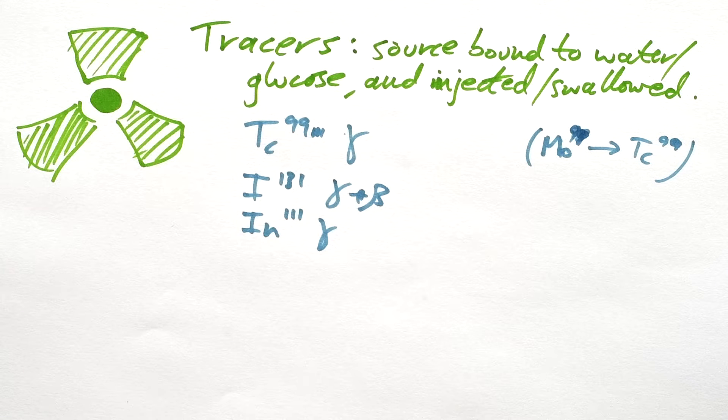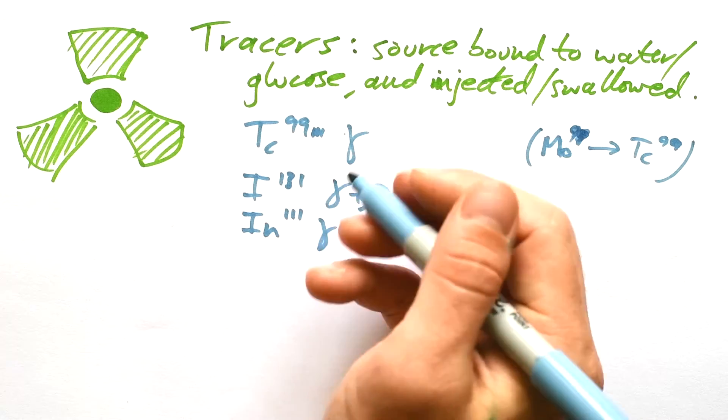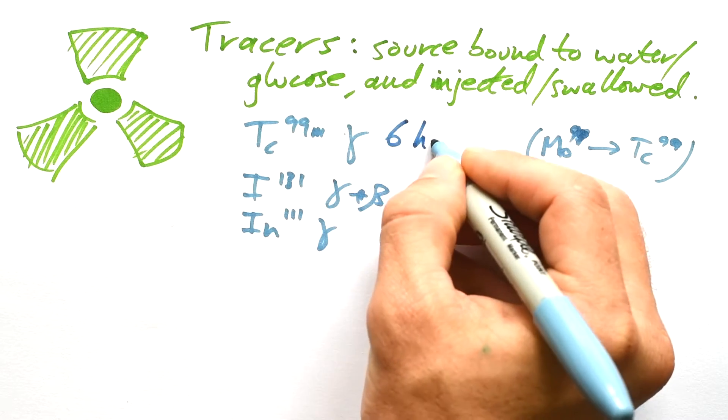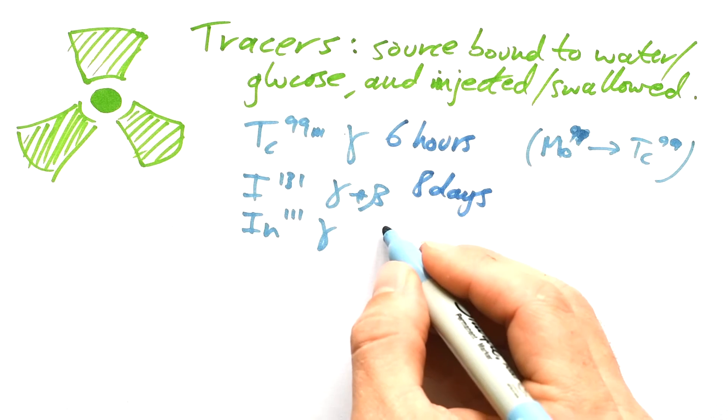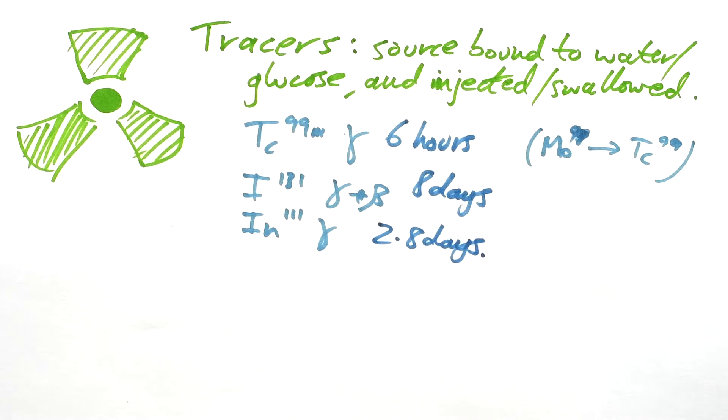Now what are the half-lives of these sources? We don't want them to be too short because otherwise you won't be able to do a scan. We also don't want them to be too long because otherwise they're going to stay in someone's body for a long time, and that's no good. Technetium has a half-life of about 6 hours, Iodine-131 8 days, and Indium nearly 3 days. Now we call these the physical half-lives. That's the normal half-life, what we're used to. Technetium is sort of like a good all-rounder isotope.